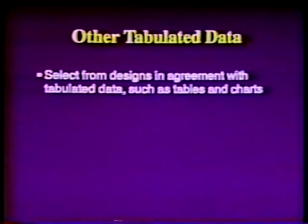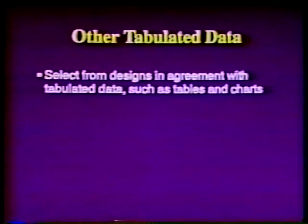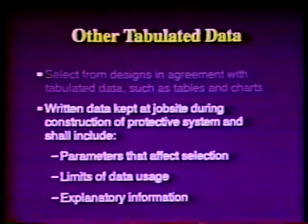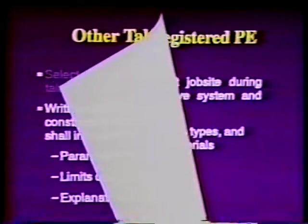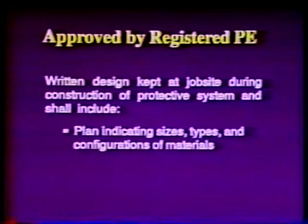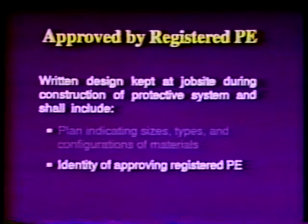The third option when choosing the use of support, shield, or other protective systems is design using other tabulated data. The contractor may select from designs in agreement with tabulated data, such as tables and charts approved by a registered professional engineer. The written data are to be kept at the job site during construction of the protective system and shall include the parameters that affect system selection, the limits of data usage, and any explanatory information necessary to make the correct system selection. The fourth option is to use a design approved by a registered professional engineer. Such designs are to be written, kept at the job site during construction of the protective system, and include a plan indicating the size, types, and configuration of the materials to be used, and the identity of the approving registered PE.